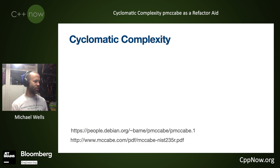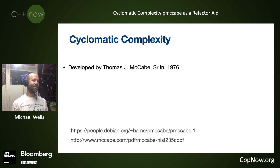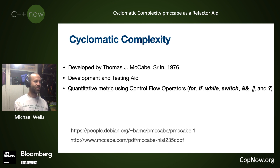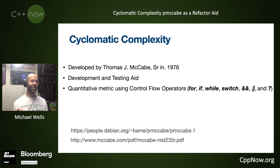Cyclomatic complexity was developed in 1976 by Thomas J. McCabe Senior — almost 50 years ago. It was originally developed as a testing aid and to help with the development process, using the typical control flow operators we're used to: if, while, switch, and so on. What's amazing over those 50 years is none of those have really changed — our languages still use the same control flow operators, so we can still measure complexity even now.